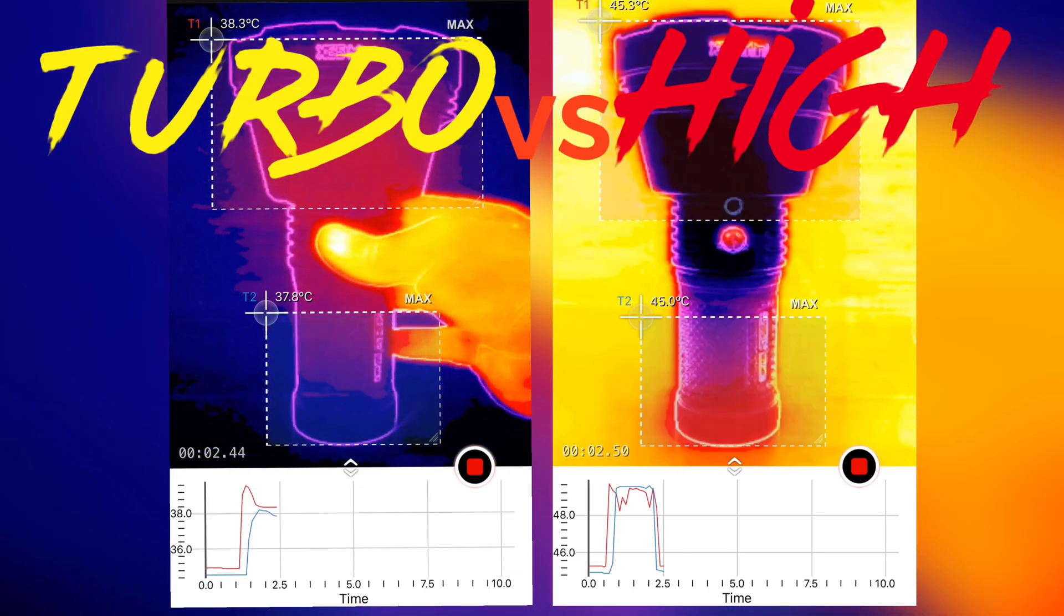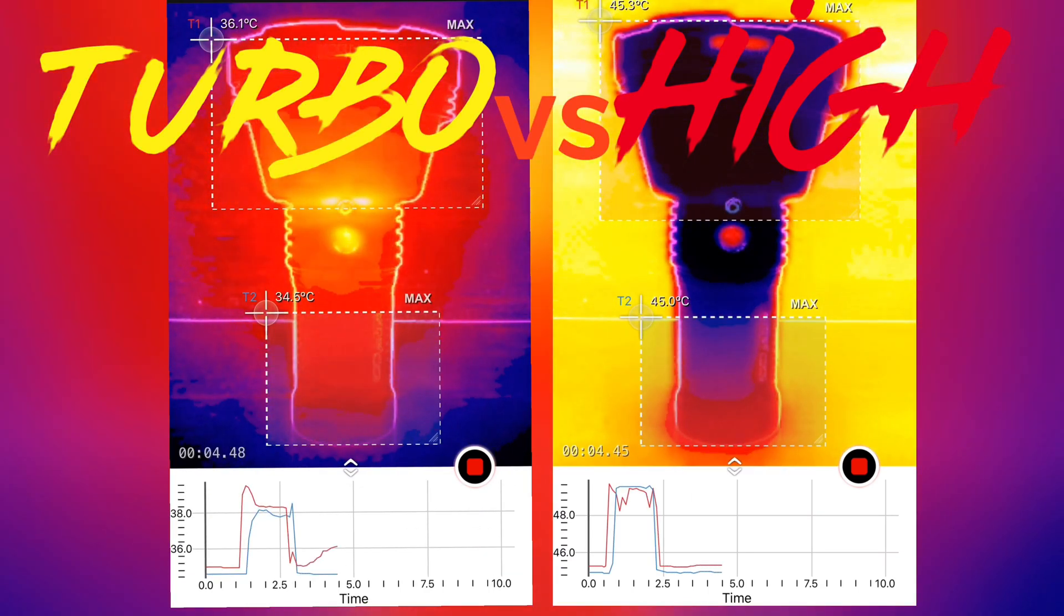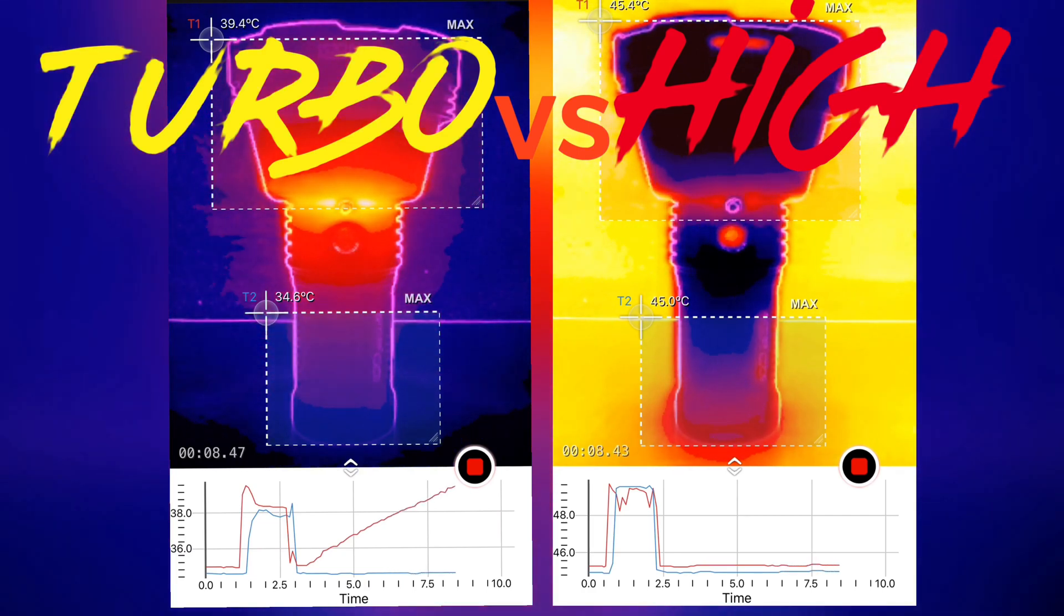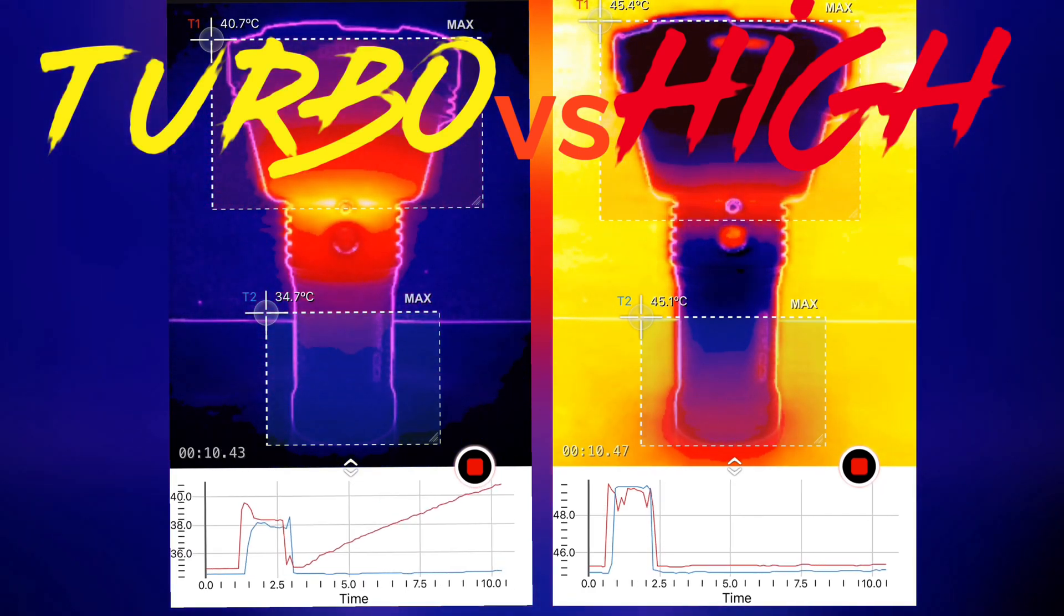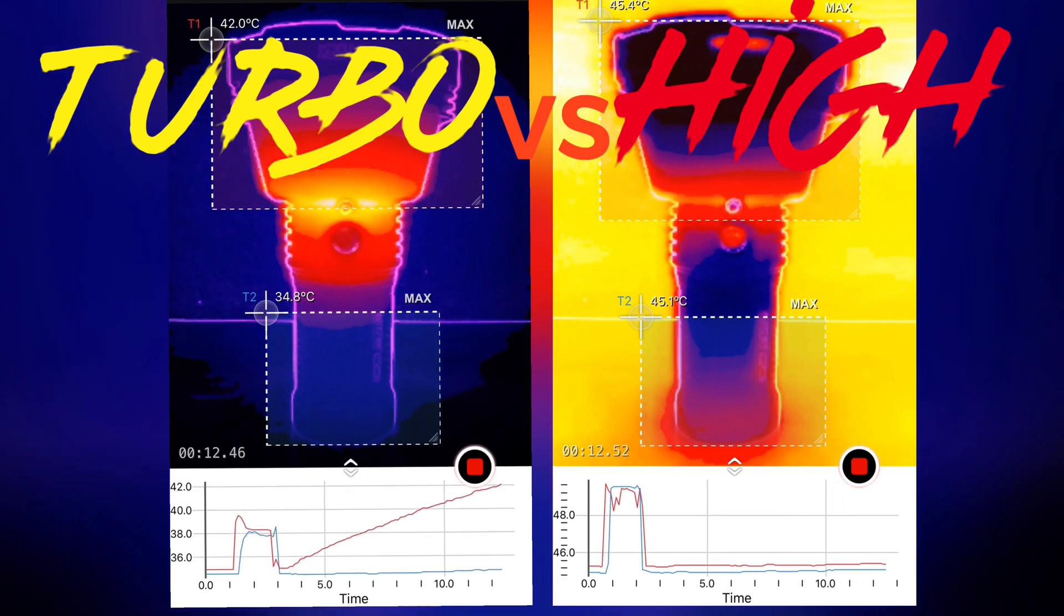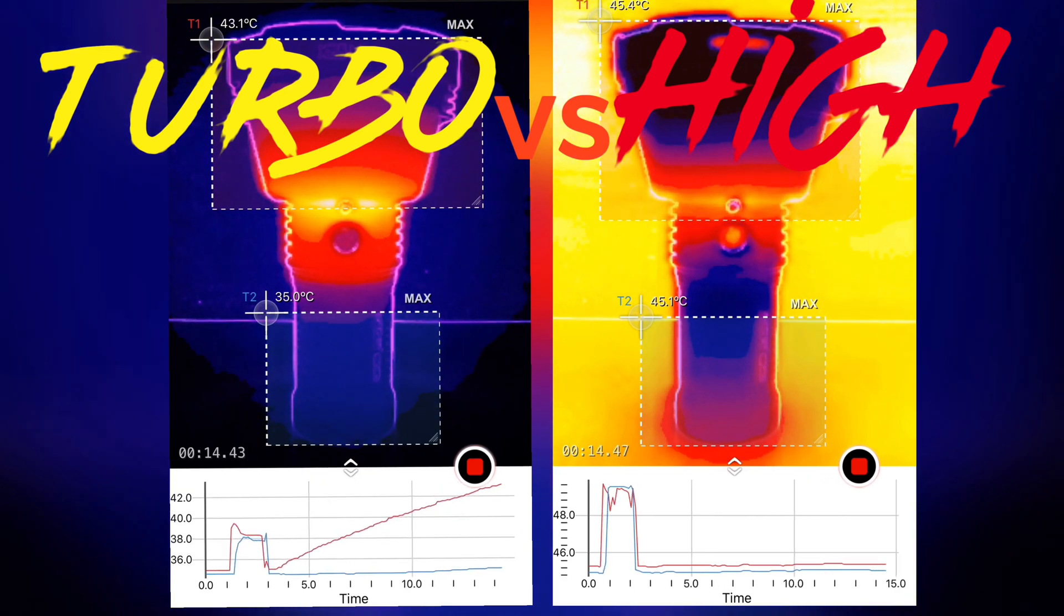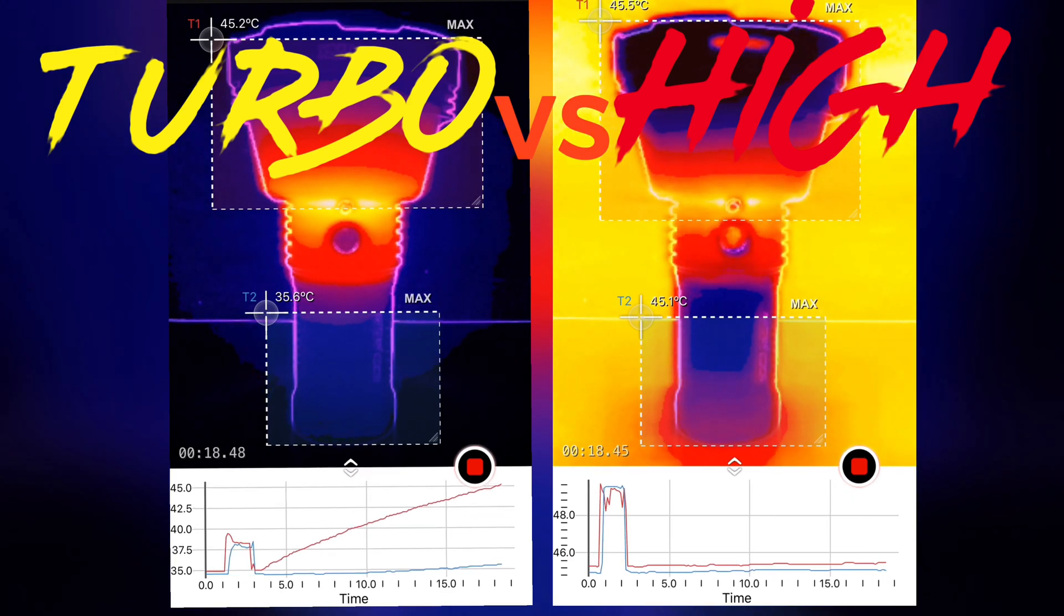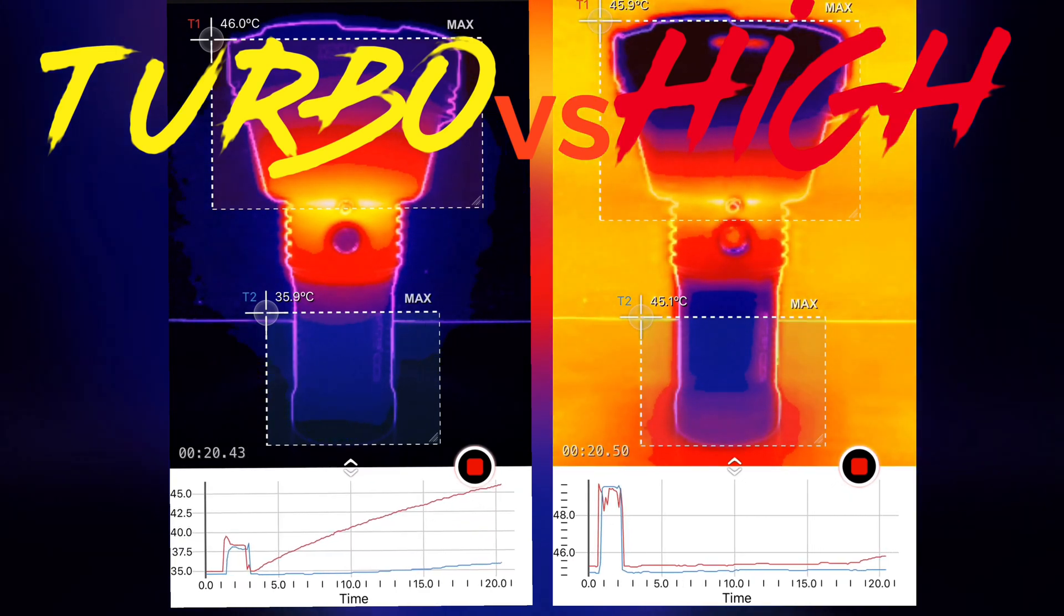What's up guys, Will here. This is a video about comparing the thermal properties for turbo versus high mode. Any other mode is just worthless in my opinion. I have the thermal areas basically on the head and on the handle of the flashlight, so the purpose of this is to determine how comfortable it is to hold in your hand and determine the thermal properties.